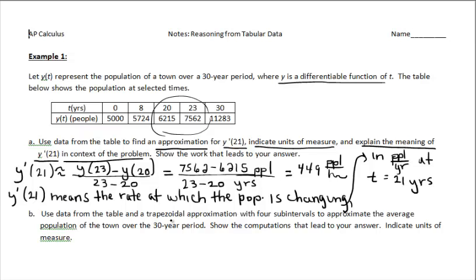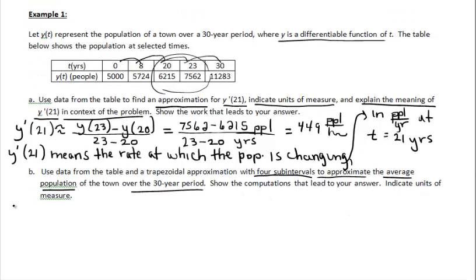We're going to use data from the table in a trapezoidal approximation with four subintervals to approximate an average population over a 30-year period. I noticed the difference between consecutive times gives four sections. We're calculating an average of the Y values, so we show an integral that represents average population — the average Y value — which is one over b minus a times the integral of Y.